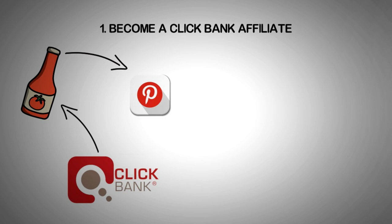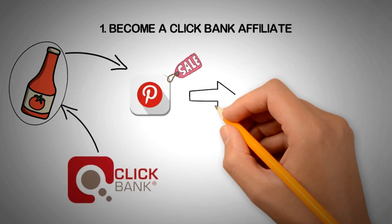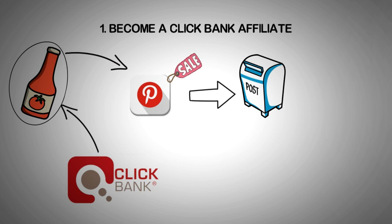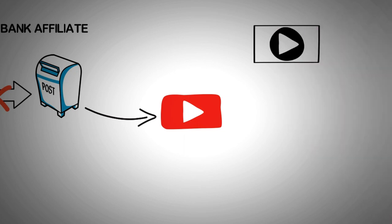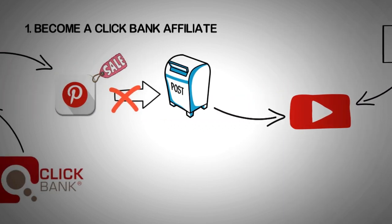If you don't know about Pinterest, it's the 31st biggest website in the world and gets around 1 billion monthly views. After you've identified your niche and products to sell, start posting content with your ClickBank affiliate link. However, you can't post your link directly on Pinterest, so what you do is create a YouTube channel, find and upload short video clips related to your product, paste the affiliate link in the video description, and then post your YouTube video link onto Pinterest.